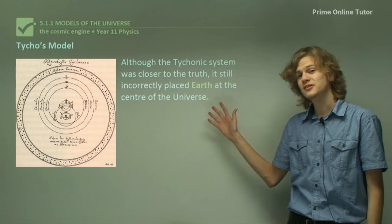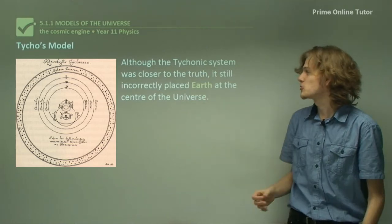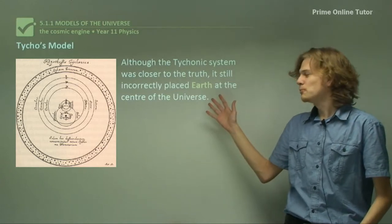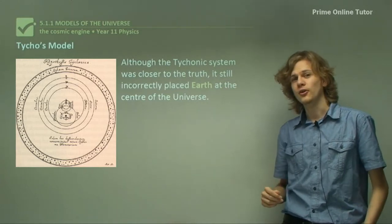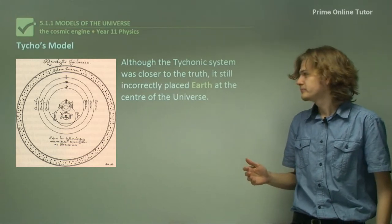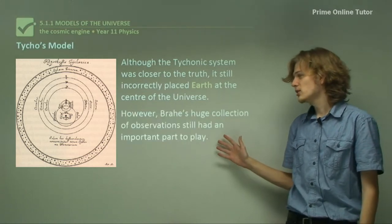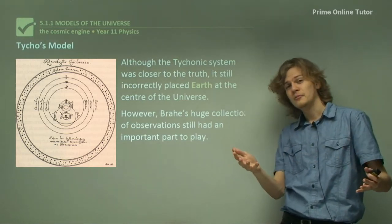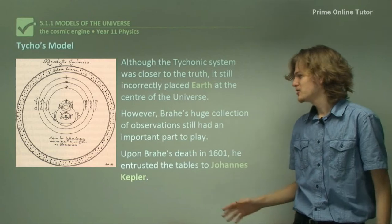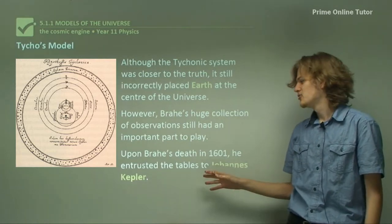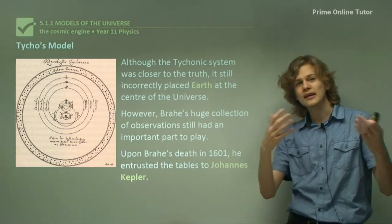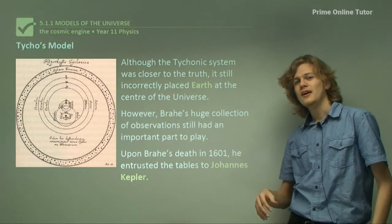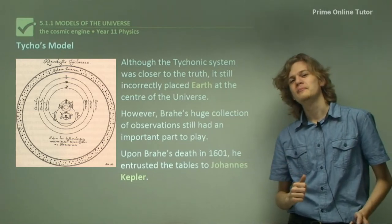Now, although the Tychonic system was closer to the truth, because it had bodies orbiting the Sun, it still placed Earth at the center of the universe, which we now know is wrong. Brahe's huge collection of observations still has an important part to play. We'll learn more about it later. Upon Brahe's death in 1601, he entrusted the tables with all his astronomical data to Johannes Kepler. And we'll learn more about him later on.